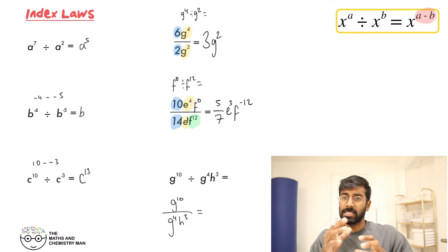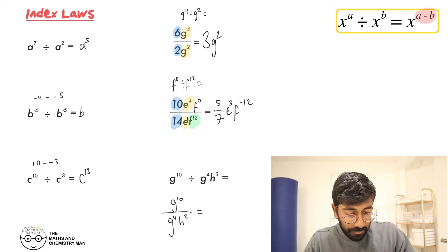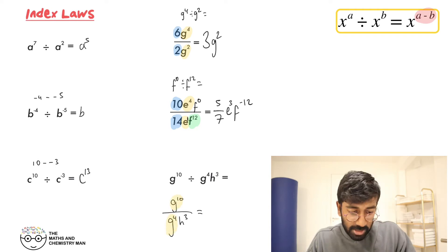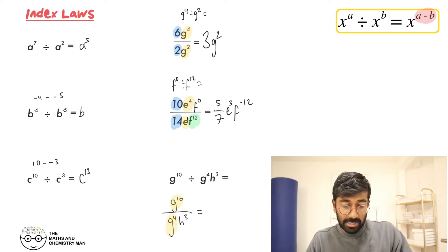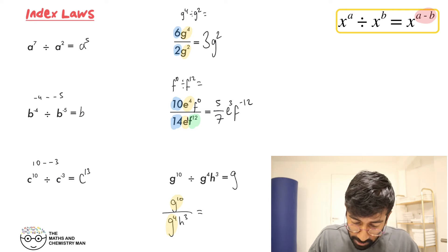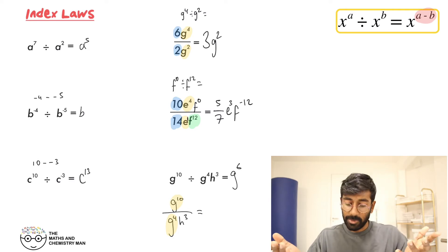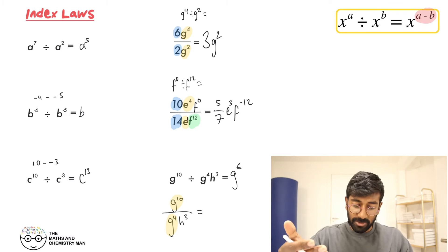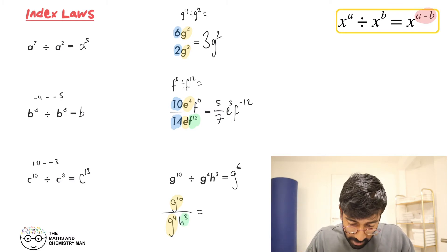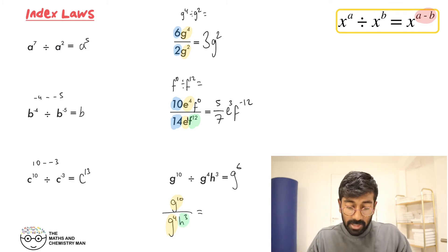The G's: G to the 10, G to the 4 — nice and simple, we subtract the powers — so that's G to the power of 6, because 10 take away 4. But then with the H's, it's like the previous question — we've got a power of H on the bottom but apparently nothing at the top.